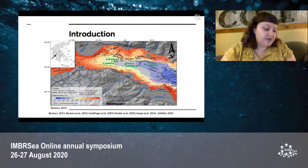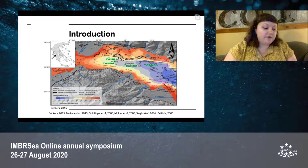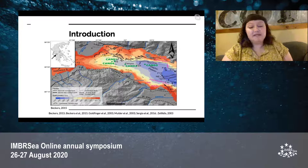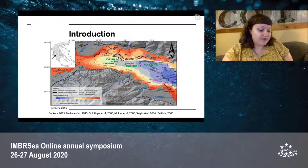A past study by Becker's et al. 2017 found that sediment failures from the slopes of these deltas have been recorded as layers of coarse grain sediments or turbidites, and proposed the basin floor, including the canyon, as a promising site for long-term paleo seismological records.